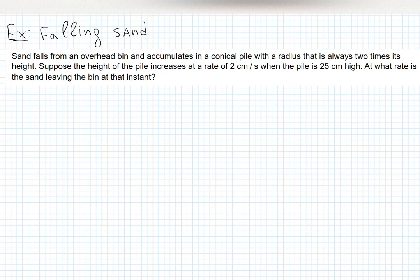Related rates problems — there are tons of them. I chose several creative problems, one of which is a falling sand problem. You have a bin and the sand is falling down, creating some kind of shape. You can guess what it is — it looks like a cone.